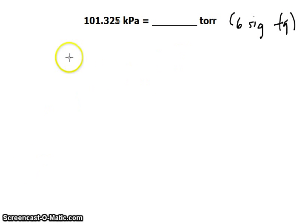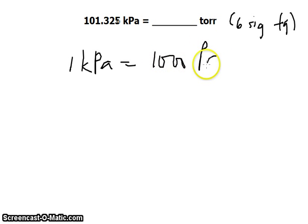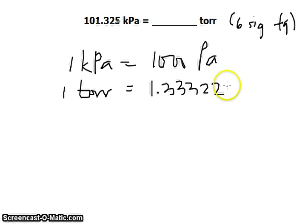To solve that, we need to know that 1 kilopascal is equivalent to 1000 pascals and 1 torr is equivalent to 1.3332 × 10² pascals.